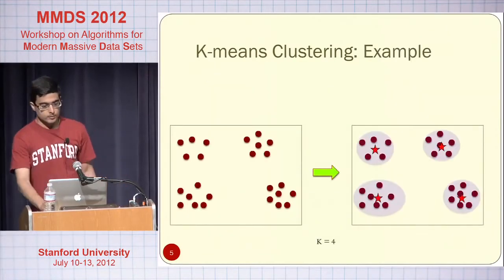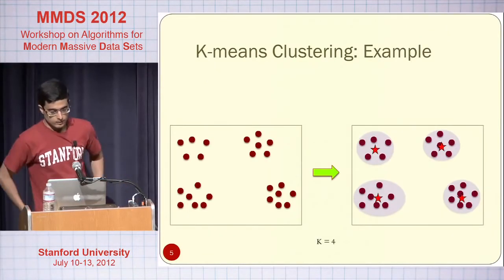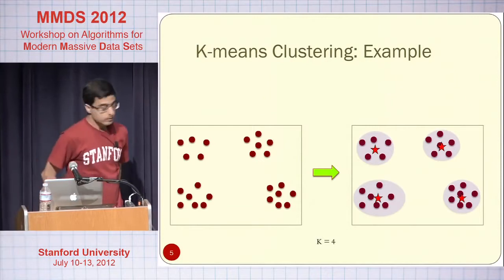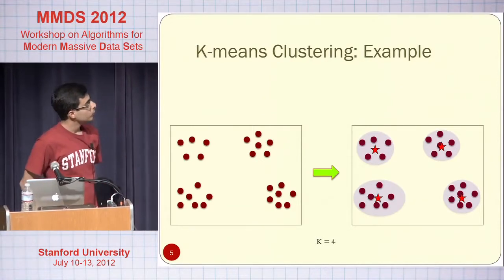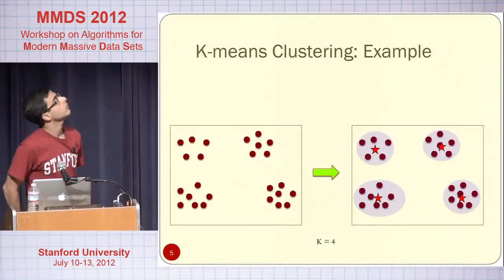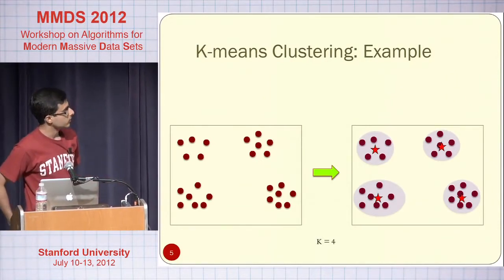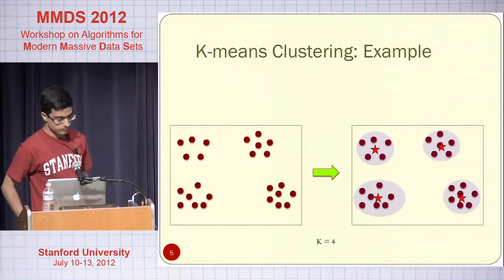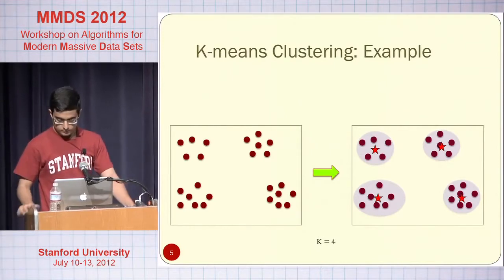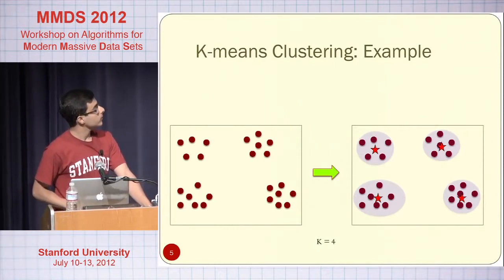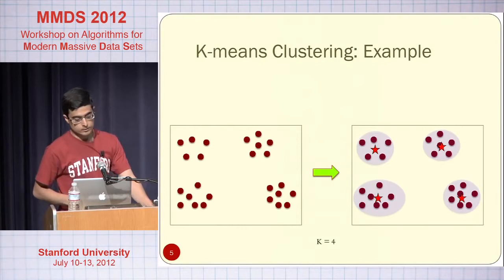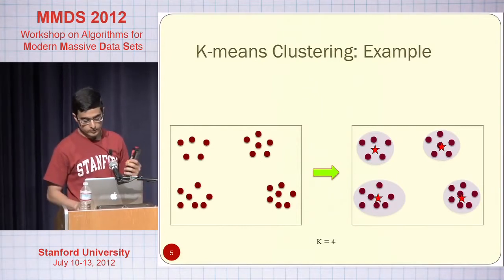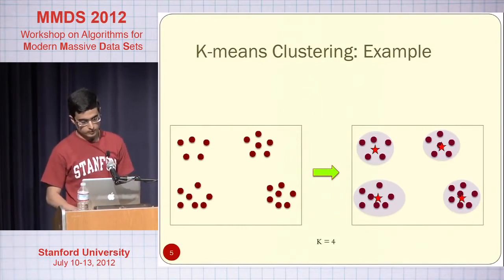Here is an example. Given the dataset on the left-hand side, and K equals four, you would like to find those four clusters on the right-hand side. You basically want to find K tightly grouped clusters in the dataset.